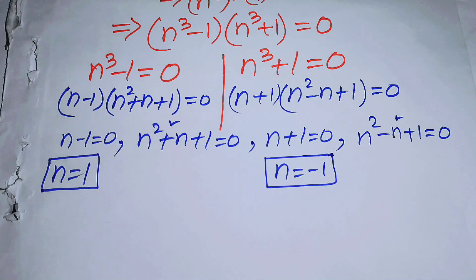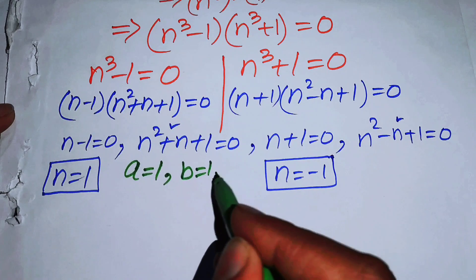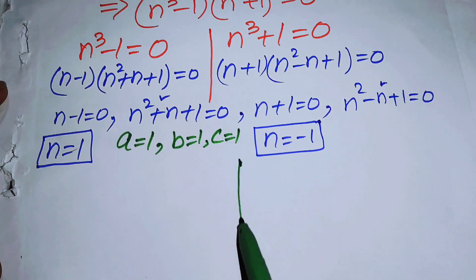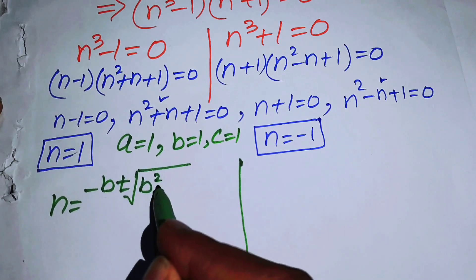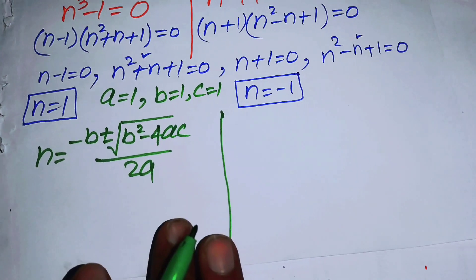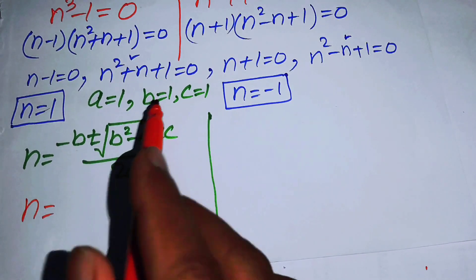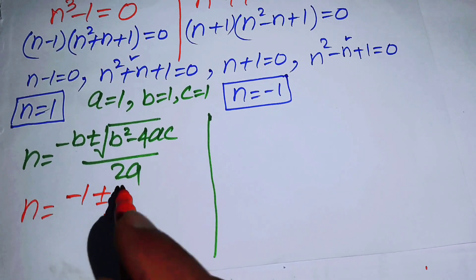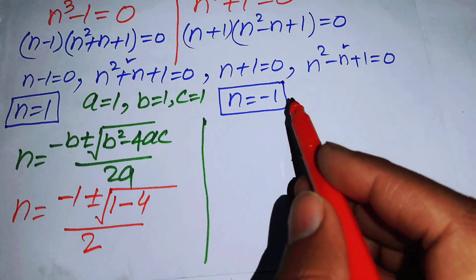We use the quadratic formula to solve both quadratic equations. For n^2 + n + 1 = 0, the coefficients are a = 1, b = 1, c = 1. Applying the quadratic formula n = (-b ± √(b² - 4ac)) / (2a), we get n = (-1 ± √(1 - 4)) / 2 = (-1 ± √(-3)) / 2.